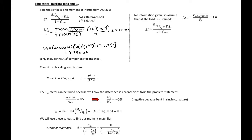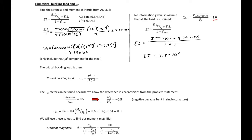We can then plug these into our EI expression. We're assuming all of the load is sustained because no information was given otherwise. So our EI equals (5.77×10⁶ + 9.79×10⁶) divided by (1 + 1), which gives us EI = 7.8×10⁶ kip·in².